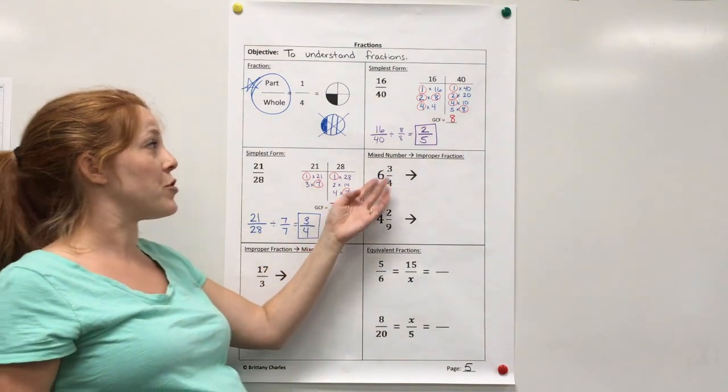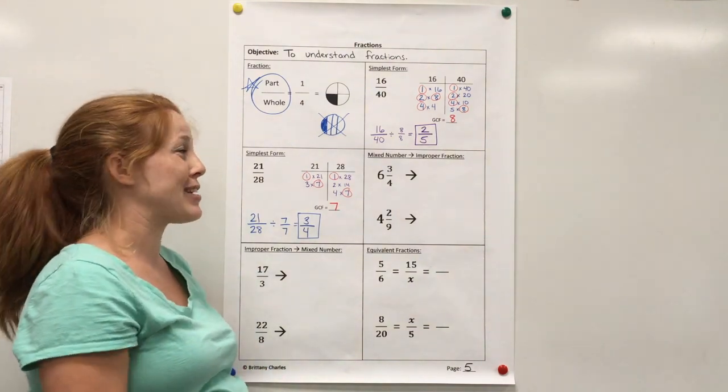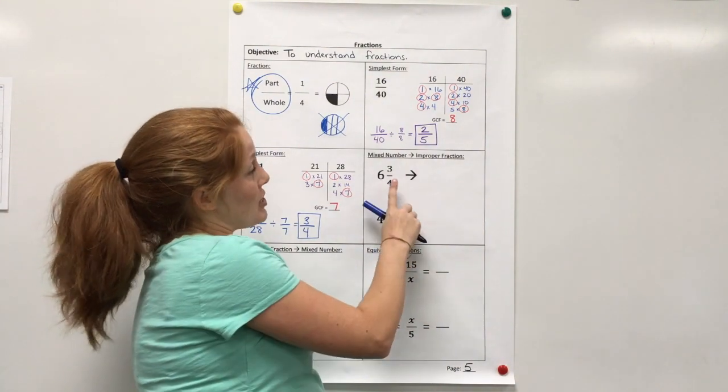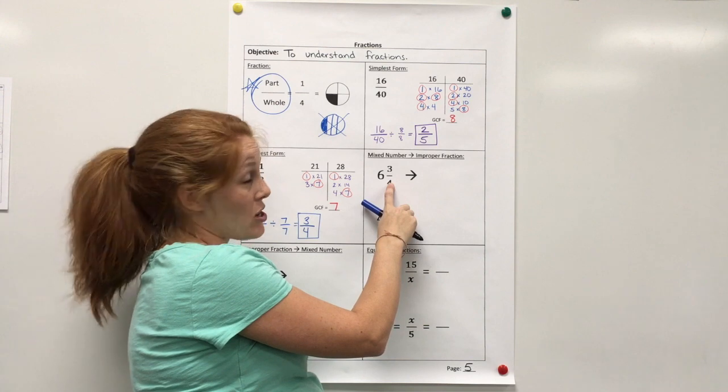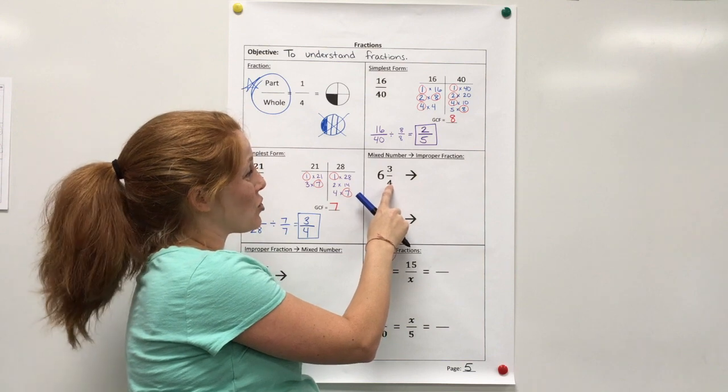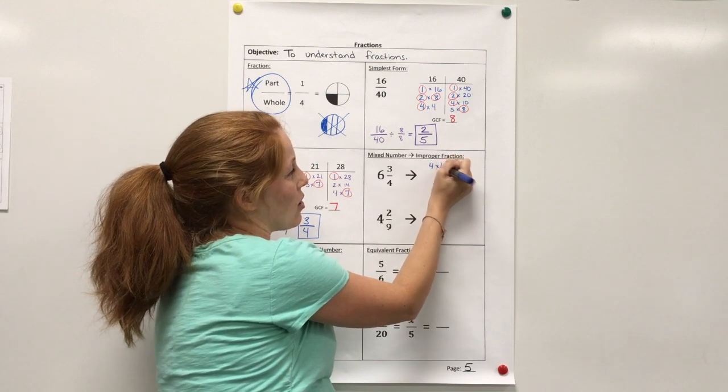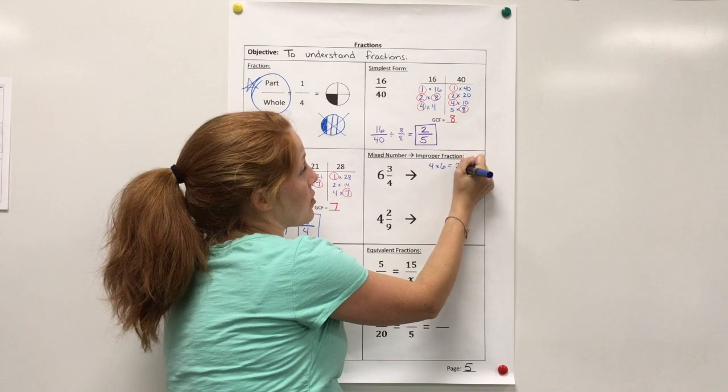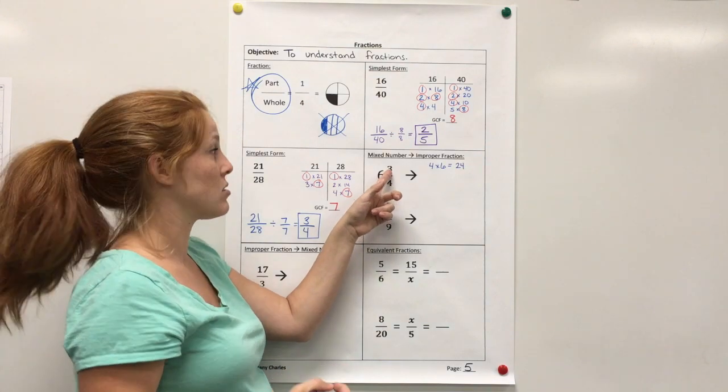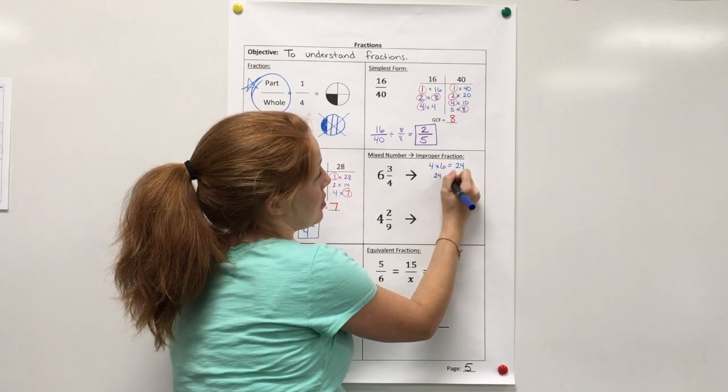Alright, next we're going to review how to change a mixed number into an improper fraction. So I do a little trick for this and I call it popcorn. Okay, it's just a little way to help remember what to do. So you're going to start by multiplying the denominator times the whole number. Because remember this shows the number of equal pieces. So you're trying to find the total pieces in 6 holes. So 4 times 6. I'm going to write it over here and then I'll show you why I call it popcorn. 4 times 6 is 24. Now besides these 6 holes, you also have 3 pieces. So then you're going to add the 3. So you have 24 plus 3.